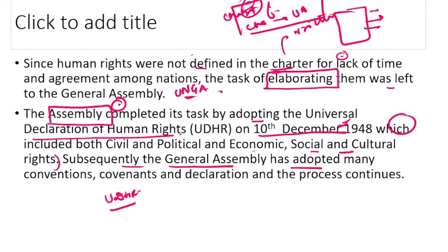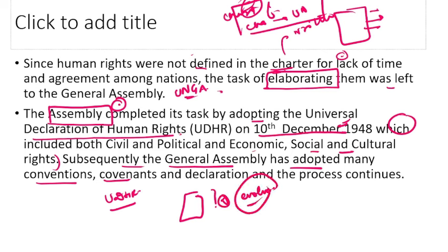Subsequently, the General Assembly has adopted many conventions, covenants, and declarations, and the process continues. It's not that once the charter was made, a final draft was prepared and you cannot add to it — this process is still evolving and you can add to it. If anything important regarding human rights comes up, you can add it and it becomes part of this charter. So here we stop. In the next video, we will explain the Universal Declaration of Human Rights. That will cover both chapters 1 and 2 of Unit 3. After UDHR, I will bring the video on Stages and Theories of Human Development. Till the time I upload the new video, bye, take care, have a great day and do like, share and subscribe to this channel.